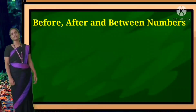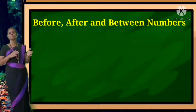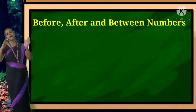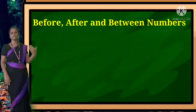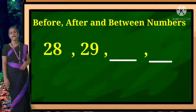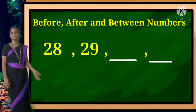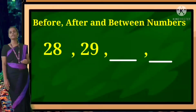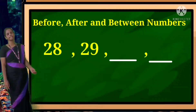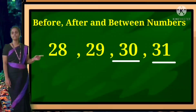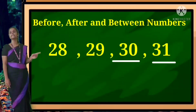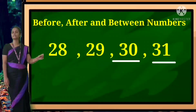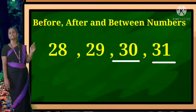Next we are going to see after number. After number means the dashes will come after. Example: 28, 29, dash, dash. What number comes after 29? 30. After 30 comes 31.